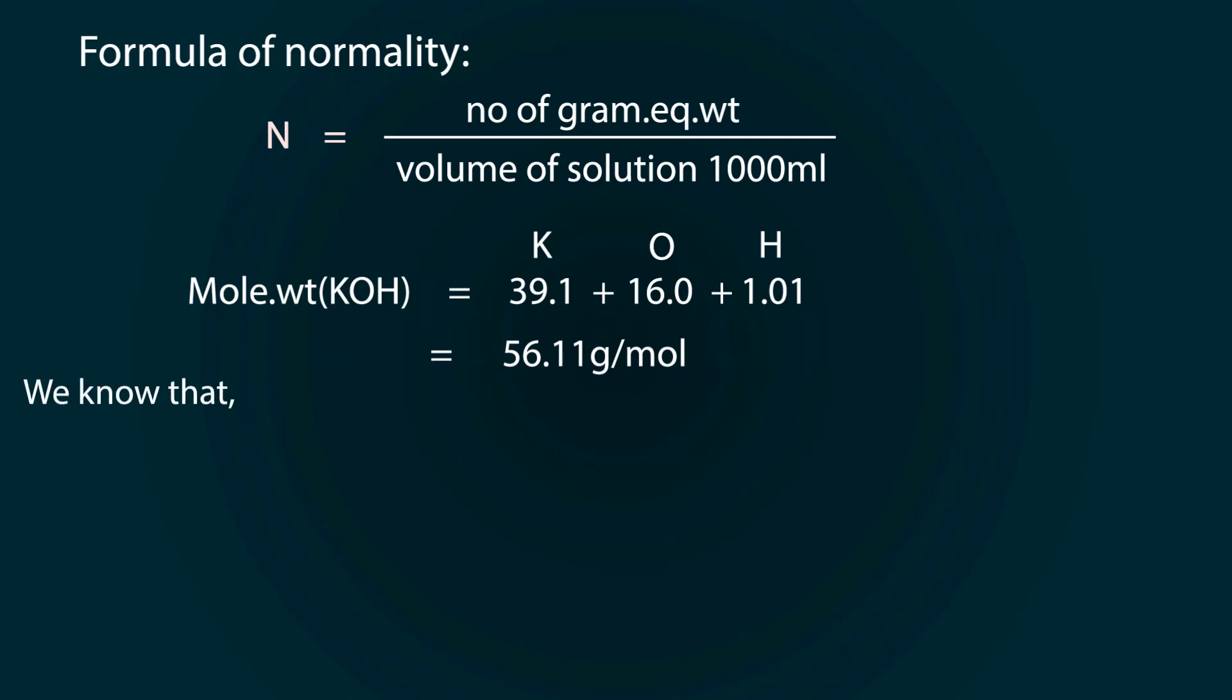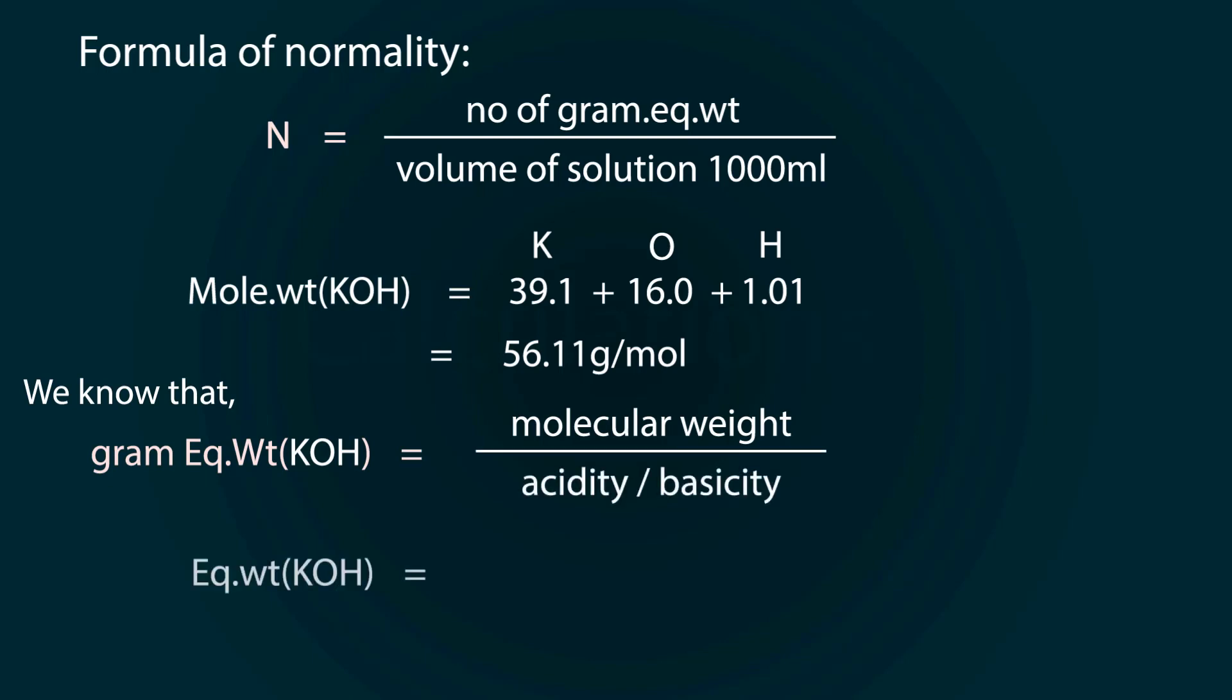We know that gram equivalent weight equals molecular weight divided by basicity. So equivalent weight equals 56.11 divided by 1 because basicity of potassium hydroxide is 1.